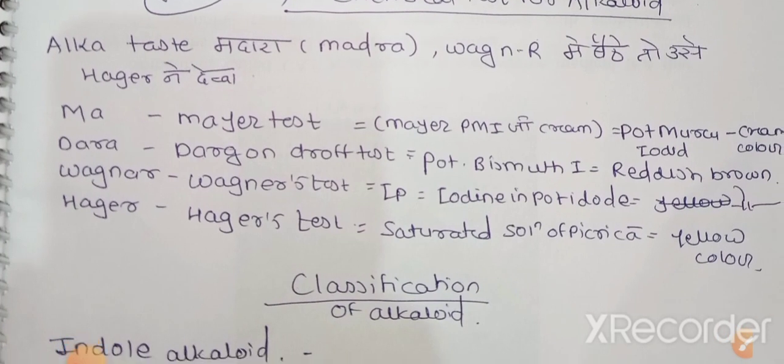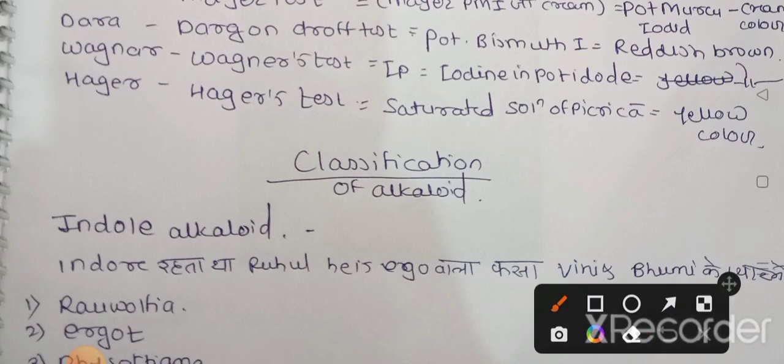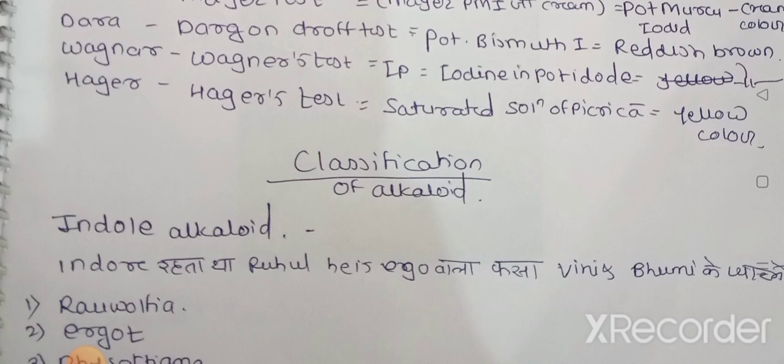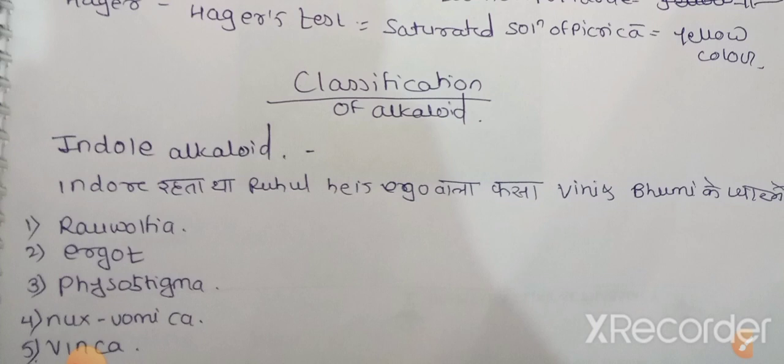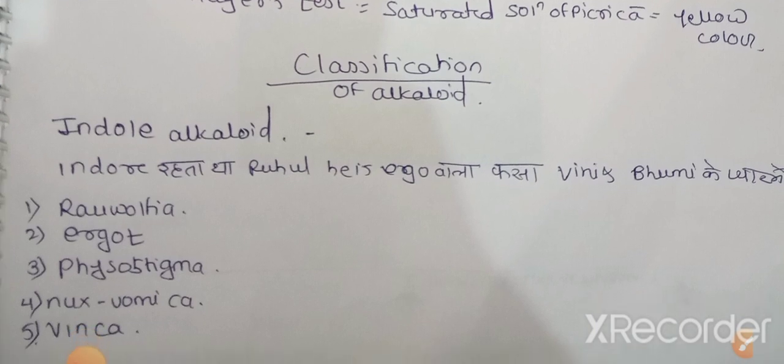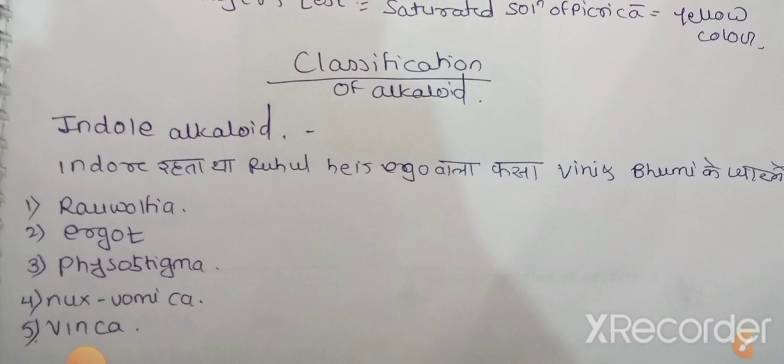After that, classification of alkaloids. Most of the time questions come in GPAT asking which of the following drugs belongs to isoquinoline family, indole family, quinazoline family. So first you have to learn by heart the classification of alkaloids. After that, you will study one by one drugs, and which important drug and its chemical constituent, microscopy, morphology, those points we'll see. So look, indole alkaloid first. The trick I told you: in Indore, Rahul was very ego, he was stuck in the love of Vinny and Bhoomi.